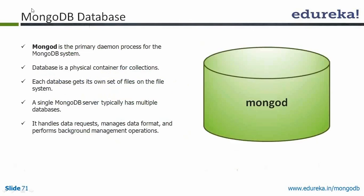Now let us understand about the MongoDB database. Mongod is the process responsible for the MongoDB database. If you want to start your database, you start the mongod process. Mongod is the primary daemon process for the MongoDB database. A database is a physical container for collections — just like in traditional systems where inside the database we used to have tables, here inside the MongoDB database you will have collections.